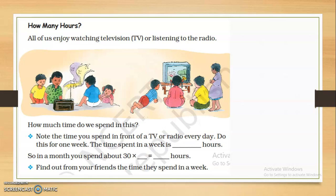The time you spend in front of a TV or radio — if it is one hour every day, then in a week it is going to be one into seven, which is seven hours. In a month, how much time will you spend? If you spend one hour a day, then for a month you are going to spend 30 hours.